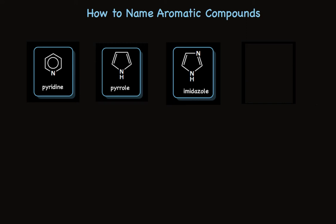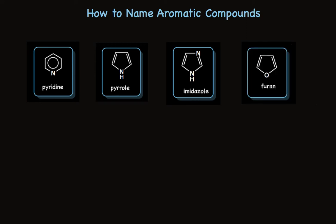And here's an oxygen example called furan. I've put blue boxes around all of these. Not all teachers would say you need to memorize these structures, but many of you are interested in biology — it'll pop up again in biochemistry and on the MCAT. So knowing pyridine, pyrrole, imidazole, and furan will be really helpful.